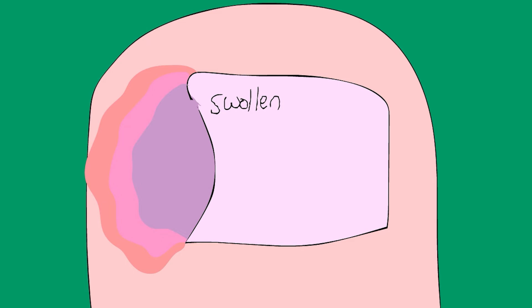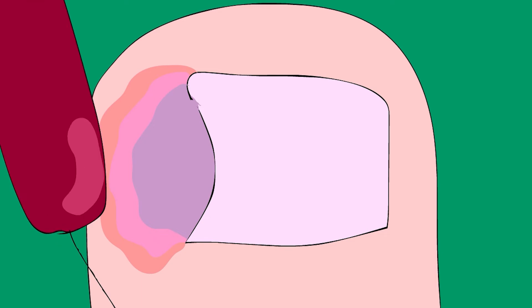We have to use a local anesthetic. We save this for when the nail is very ingrown, there's a lot of infection. We use the local anesthetic to make the toe numb.